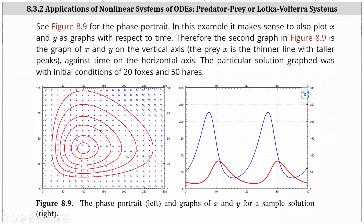On the left we have the phase portrait for the predator-prey model. In this example, it makes sense to also plot x and y as graphs with respect to time, which we see on the right. The second graph, on the right, is the graph of x and y on the vertical axis against time on the horizontal axis. The particular solution graphed was with initial conditions of 20 foxes and 50 hares. Looking at the vertical axis, we can tell that the red graph is the graph for the foxes, and the blue graph is the graph for the hares.